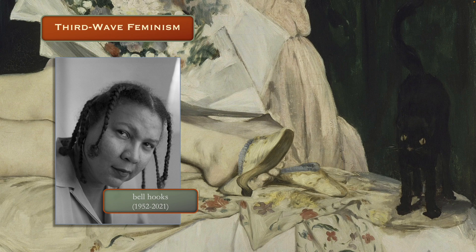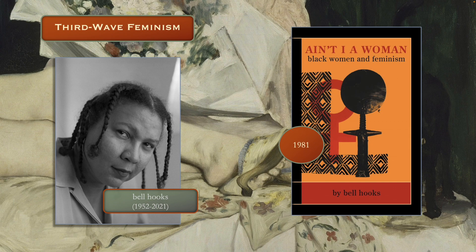This is Bell Hooks, who died just a couple of years ago. Famous for lots of reasons, but this book, Ain't I a Woman — a title she adapted from a 19th-century Sojourner Truth speech — in this book, Hooks makes the point that historically, a combination of sexism and racism had assured that Black women were of the lowest social status of any group in American society. And that by ignoring racial questions, second wave feminists — most of them white women — devalued Black femininity and contributed to the continued oppression of Black women.